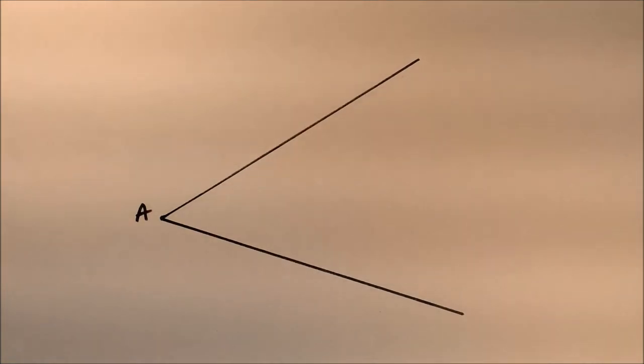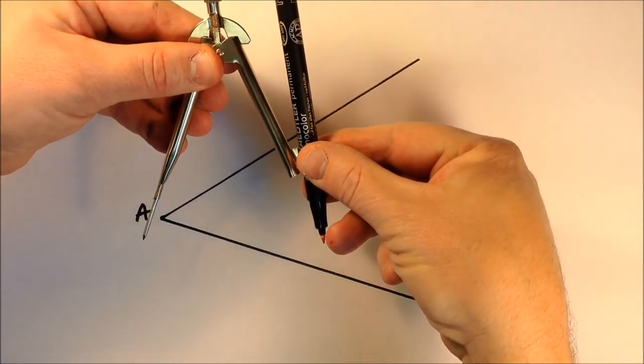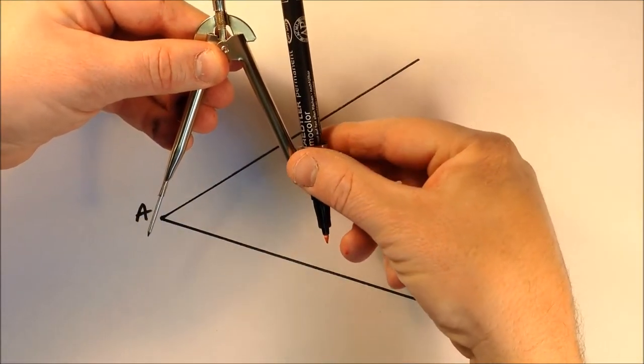I'm going to bisect angle A using a compass and a ruler. So I've got my compass open to a suitable radius.